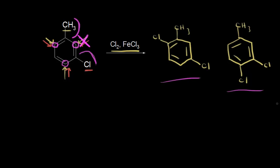That's how to think about directing effects in synthesis when you have multiple substituents. First, think about where each substituent will direct. Then consider the activating strength of each director. And finally, think about steric hindrance when evaluating your products.